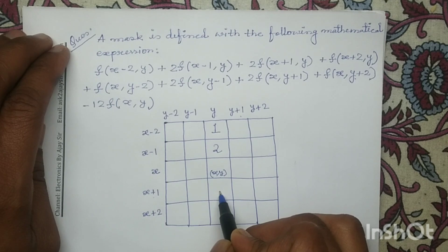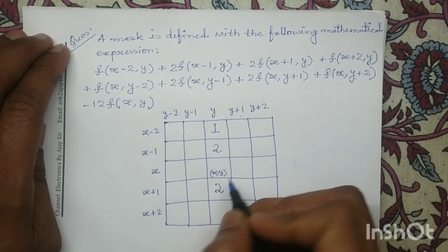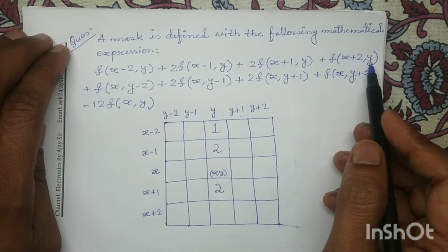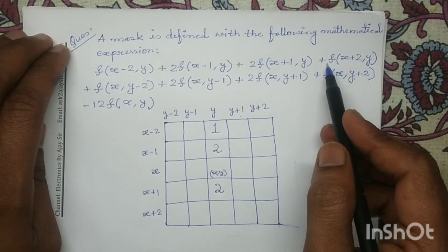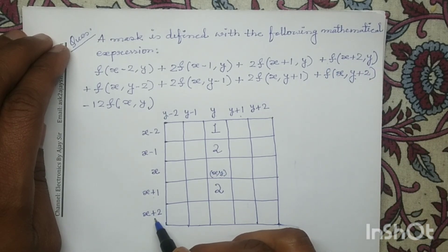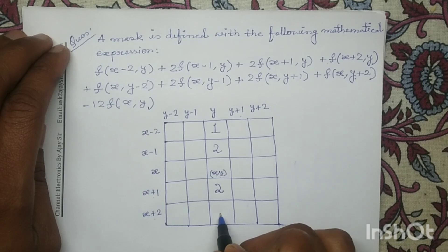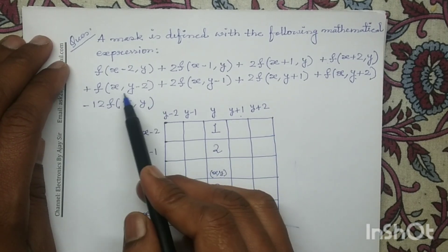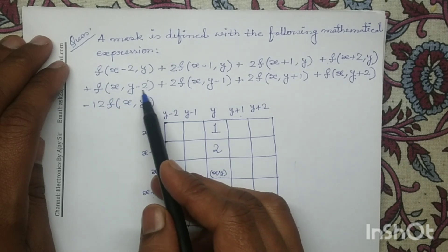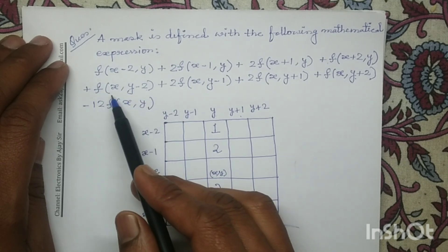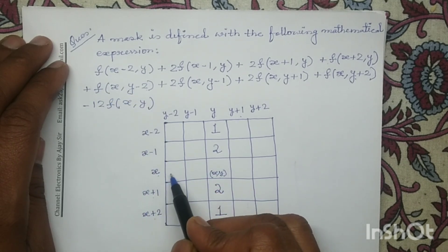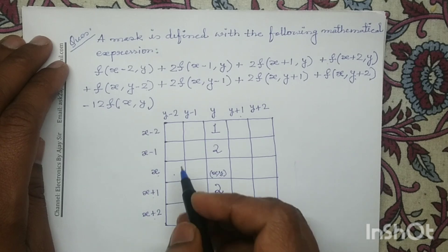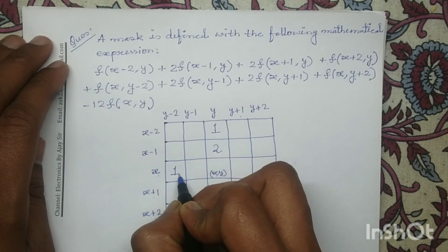For f(x+2, y), the coefficient is 1 — f(x+2, y) represents this pixel and the coefficient here is 1. Next, f(x, y-2) — the coefficient is 1 — f(x, y-2) represents this pixel and the coefficient is 1, so I will write 1 here.